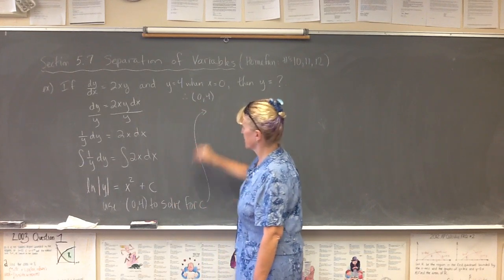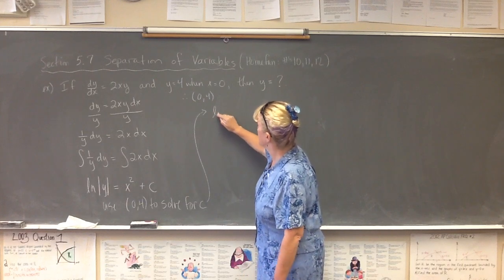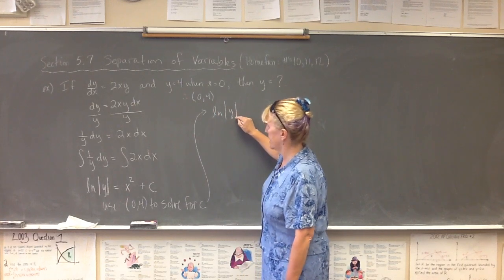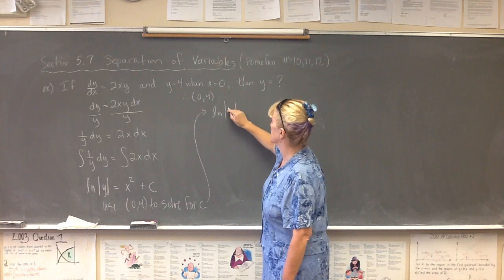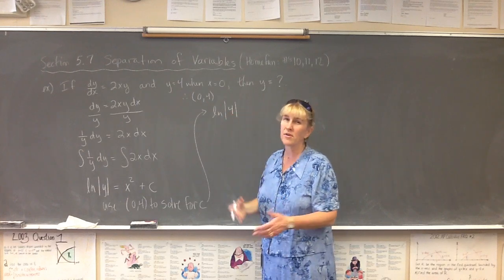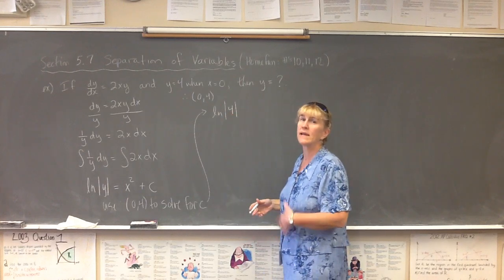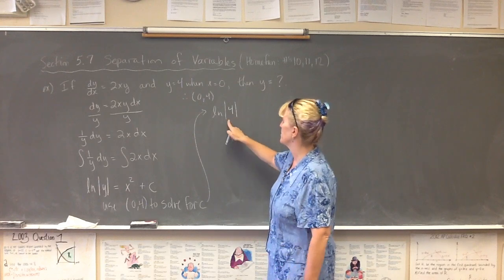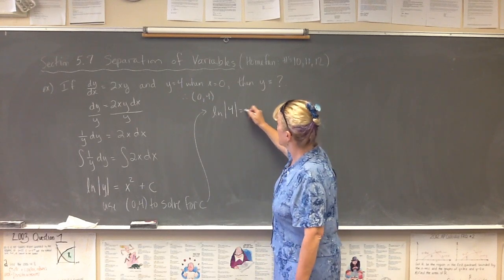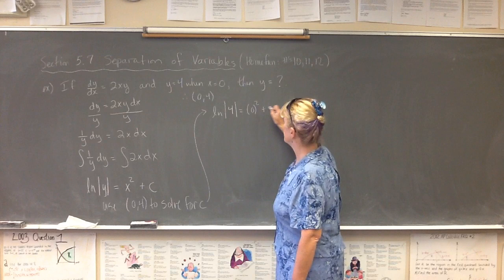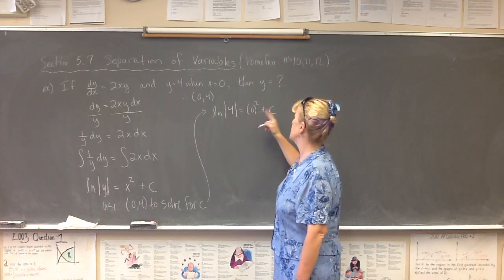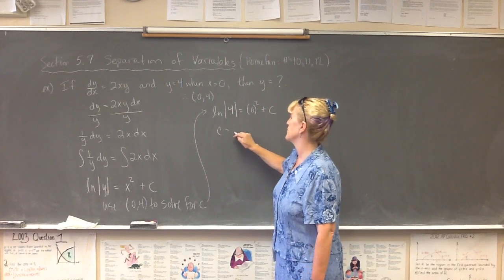Okay, you can come up here. So now I have natural log of the absolute value of y, and my y is going to be up 4, which means my absolute values aren't even necessary because the absolute value of 4 is 4. You'll see those disappear in probably the next step. So we're going to put x equals 0 squared plus c. 0 squared is 0, so c is just the natural log of 4.